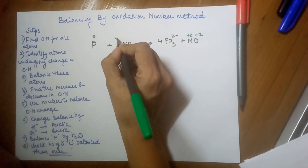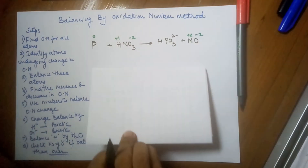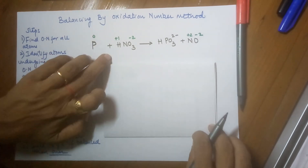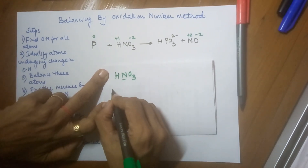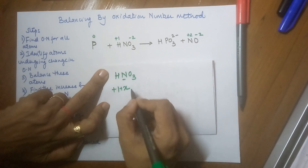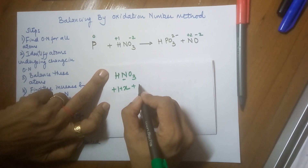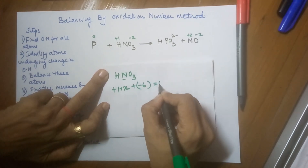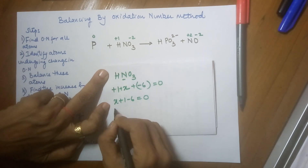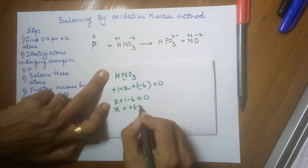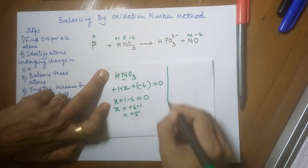Coming to nitric acid: hydrogen is plus one, oxygen is normally minus two except for the exceptions. Moving on to nitrogen — for those of you who are weak in oxidation numbers, let me give you a quick recap. For HNO3, I do not know the oxidation number for nitrogen, so I call it x. Oxygen is three times minus two, which makes it minus six, and the net charge is zero. So x plus one minus six equals zero, giving x equals plus five. So nitrogen has an oxidation number of plus five.